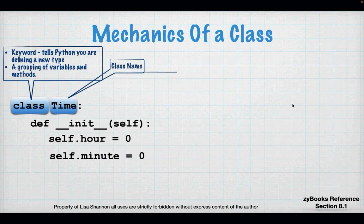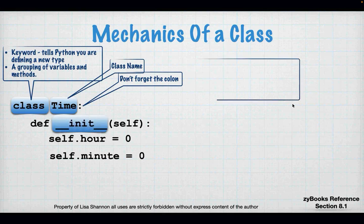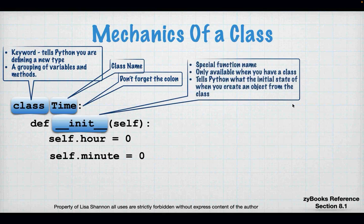We have this very special function called a constructor. What a constructor does is it tells Python how to build out your object. Python knows there's a class called time with variables and functions, but how does it start? What's its initial state? The constructor tells it what its initial state is. So self is a very special keyword that tells Python a function is an instance function. There are two types: instance functions that exist in every object, and static functions that exist once in the class.